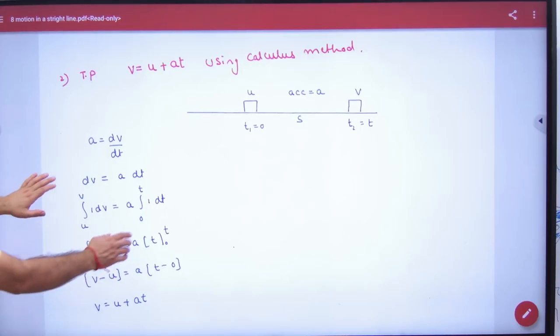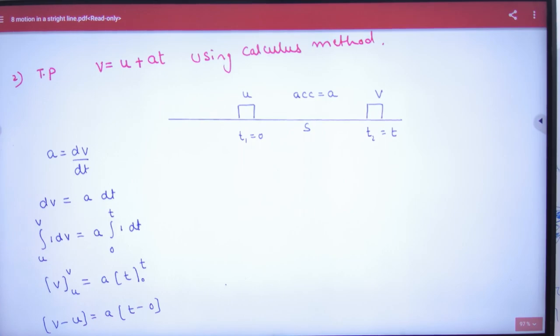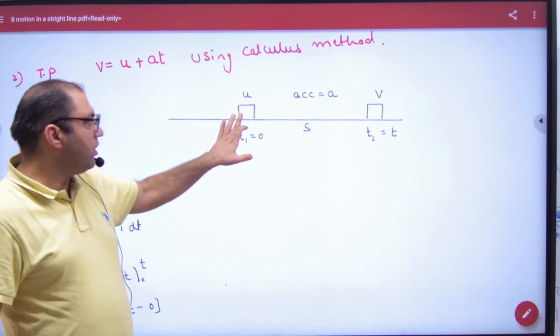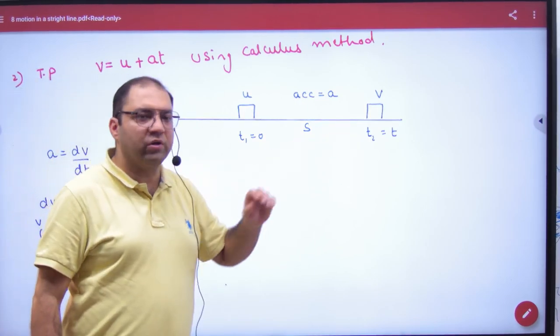To prove the second equation of motion, v is equal to u plus at. Imagine your body's velocity initially is u. A little bit later, the body's velocity is v.